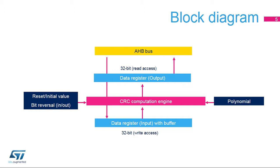It contains a single 32-bit register, which is used for both writing and reading by either the CPU or DMA controller. The initial value, input-output bit reversal, and polynomial coefficients are configured by the software during the initialization phase before starting a new CRC calculation. The CRC computation engine will hold the result of any previous CRC calculation, which then becomes the initial value for the next calculation, thus allowing a new CRC computation of a data block.